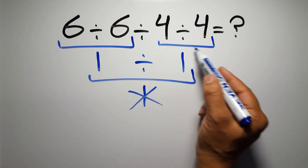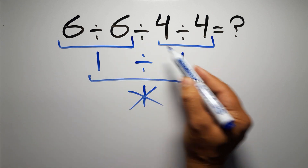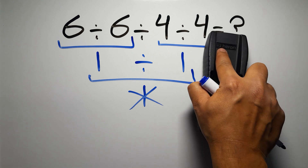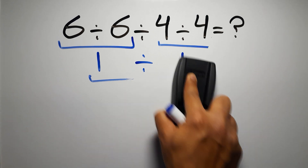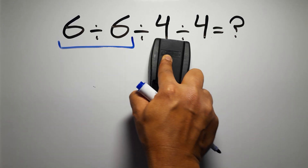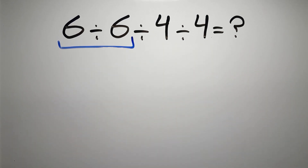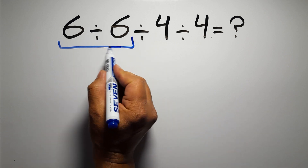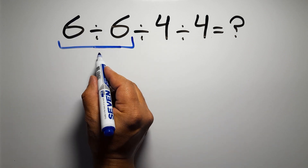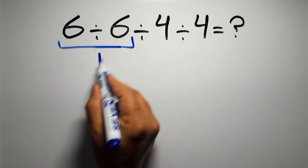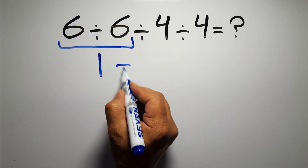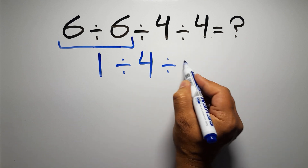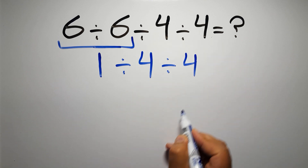If you do this division before this division, it is wrong. So first this division: 6 divided by 6 is just 1, so we get 1 divided by 4, and again divided by 4.